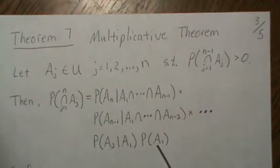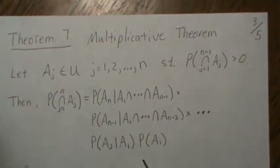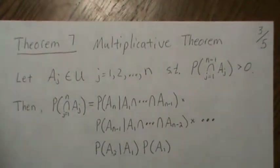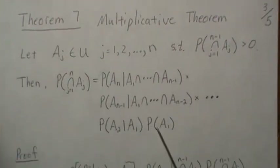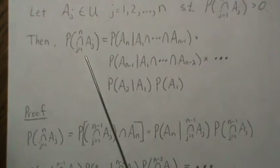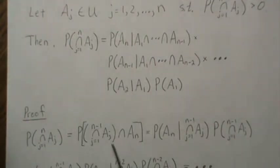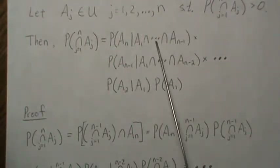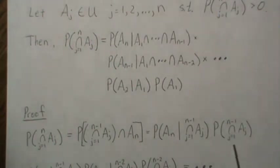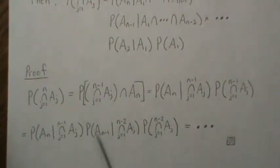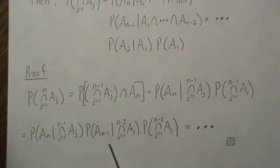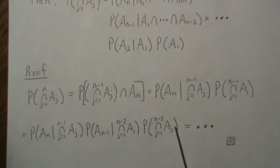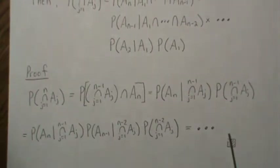This will help solve so many probability problems. At the end of this mini-series I'll do random examples where this plays a major part. For the proof: we take the finite intersection and break off A_N intersected with the rest, rewriting it as a conditional probability times the remaining intersection. We repeat the same step — breaking down that remaining intersection — and keep going until we arrive at the full product formula.